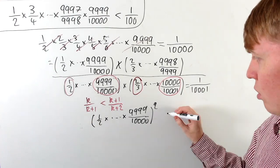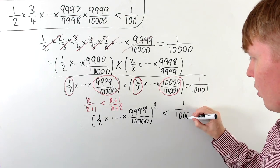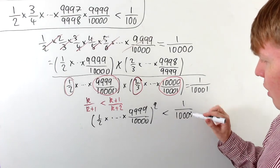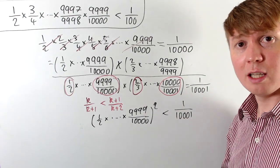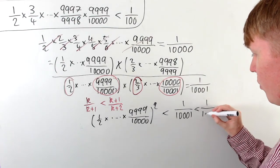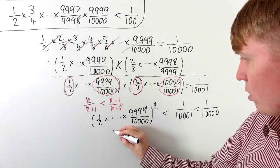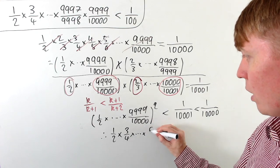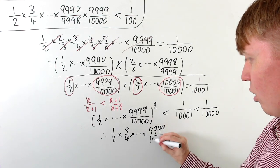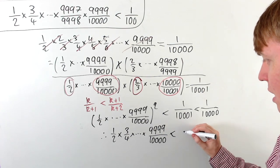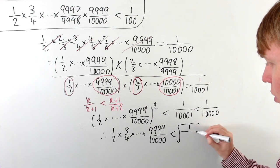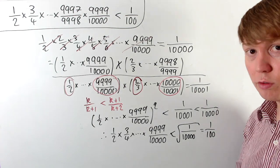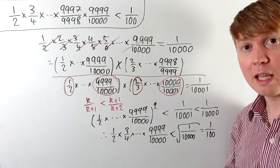So our original product squared is less than 1 over 10,001. Now, 1 over 10,001 is less than 1 over 10,000, so if we take square roots we can conclude that our original product — one half times three quarters and so on all the way up to 9,999 over 10,000 — is indeed less than the square root of 1 over 10,000, which equals 1 over 100. We've shown that our original product is less than 1 over 100.